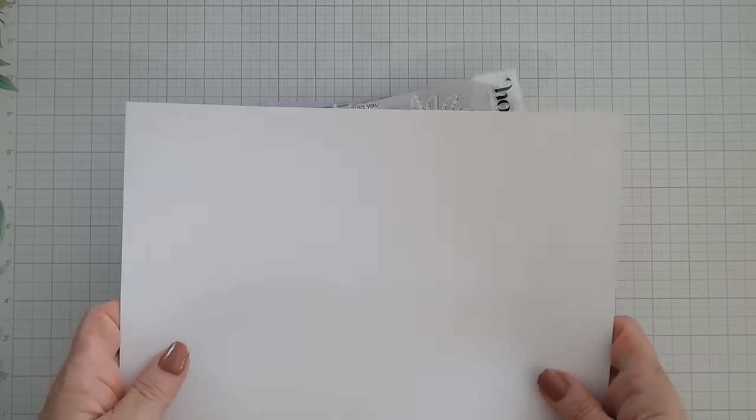That is included along with two eight and a half by eleven sheets of Neenah Classic Crest Solar White Cardstock. These are 110 pound heavy weight. Great for card bases and they're great for stamping and Copic coloring too. You get two sheets of white which is really nice.